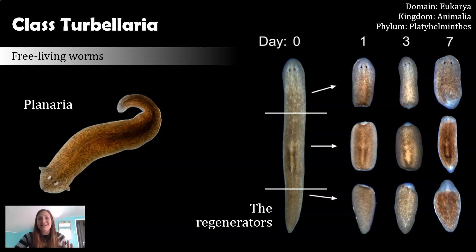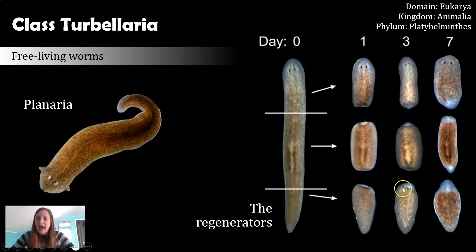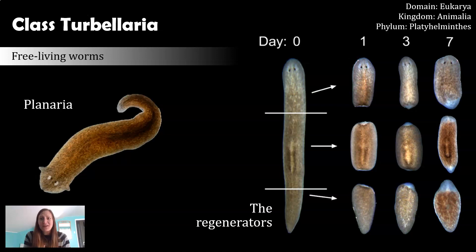It can regenerate its head — that is not seen anywhere in the non-fictional animal kingdom. There are some fictional characters that can do that, but nothing in real life. The same is true if you just have the tail region: after a week you start seeing the development of a head region, and if you gave it more time, you would see a fully-fledged Planarian.